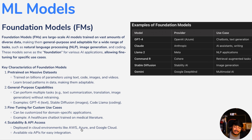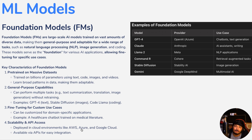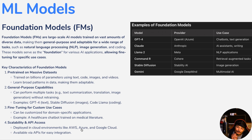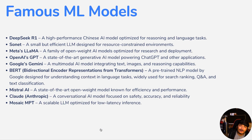Good examples of foundation models include GPT-4, Claude from Anthropic, LLaMA from Meta, Command R from Cohere, Stable Diffusion from Stability AI, and Gemini from Google DeepMind. And of course there is a new one called DeepSeek R1, which I'll talk about right now.